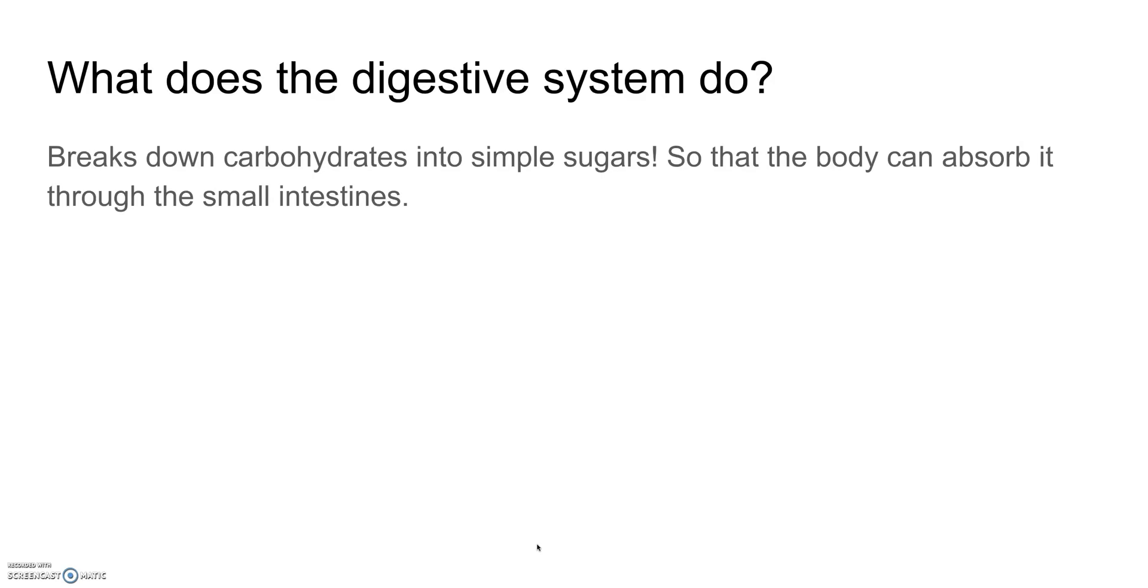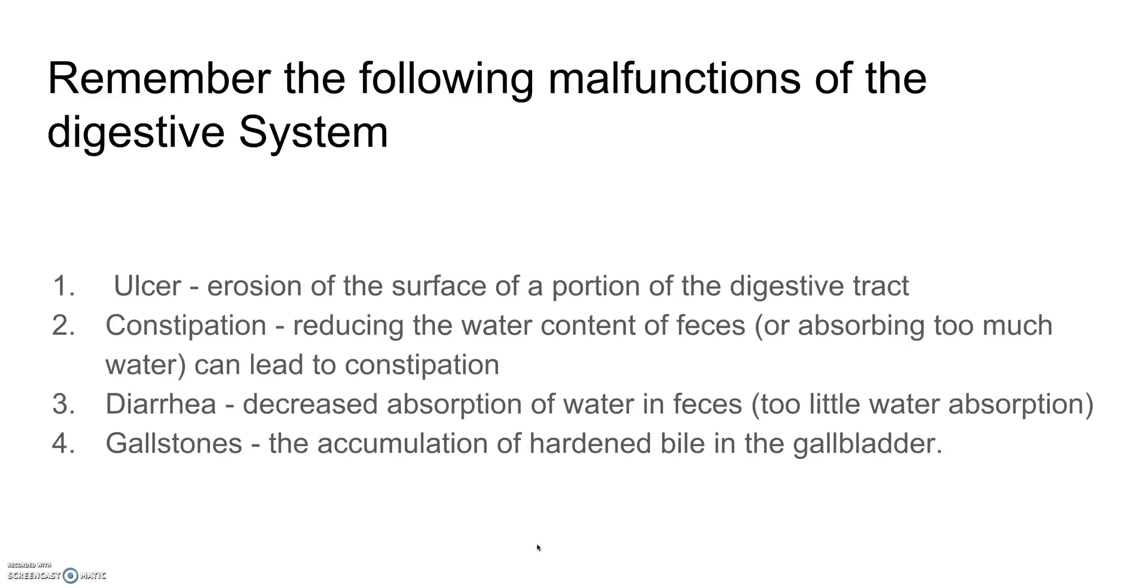Now what does this digestive system do again? Breaks down carbohydrates into simple sugars so the body can absorb it through the small intestine, and this is with the help of enzymes. Remember the following malfunctions of the digestive system: an ulcer is an erosion of the surface of a portion of the digestive tract, so it's like an irritation.